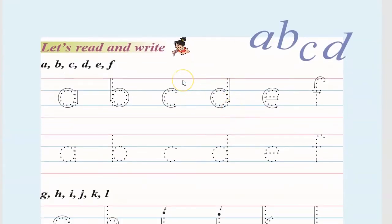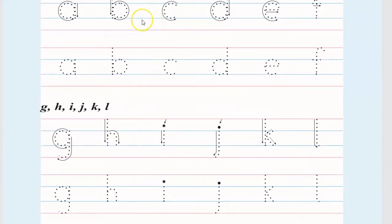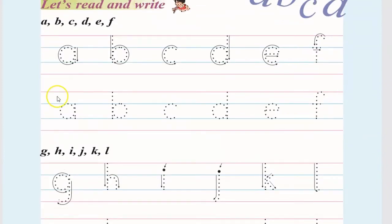Now let's read and write A, B, C, D. A for Apple. B for Ball. C for Cat. D for Dog. E for Elephant. Draw it. F for Fan.